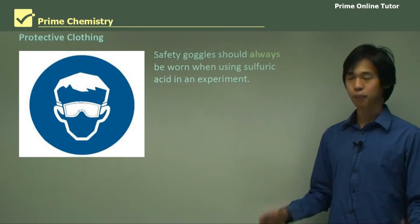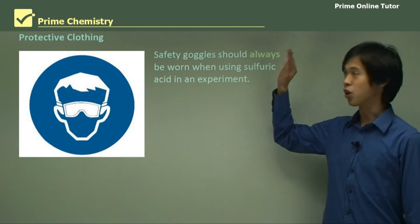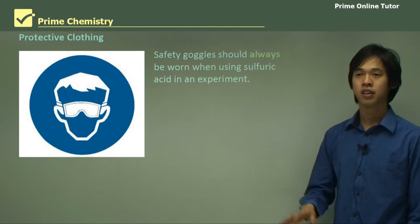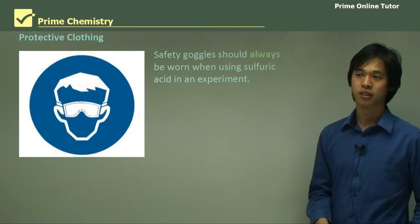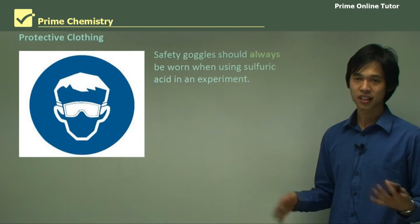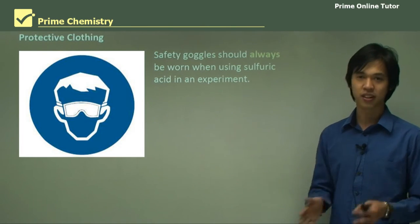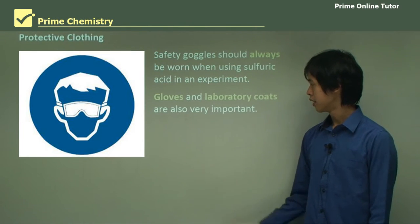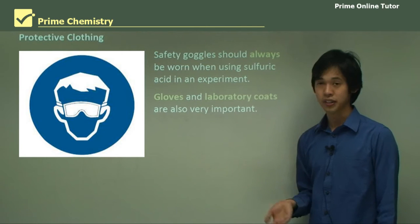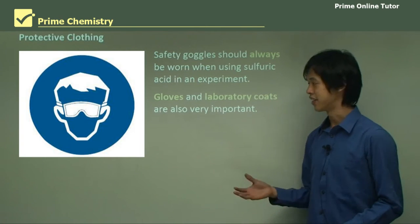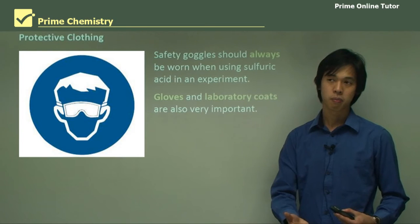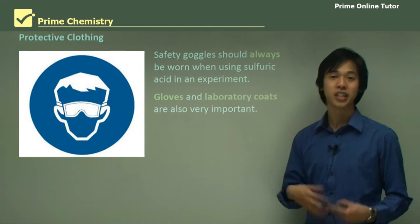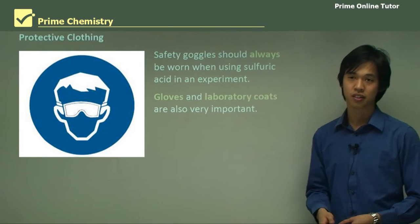So the first thing is protective clothing. Safety goggles should always be worn when using sulfuric acid in an experiment. Safety goggles have to be worn — there's no exception to this rule. You have to wear safety goggles when dealing with sulfuric acid. Gloves and lab coats are also really important. There is no way around this; you need to be wearing these things when you deal with sulfuric acid.